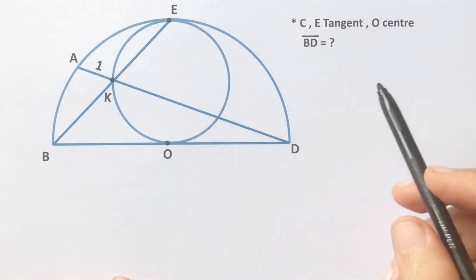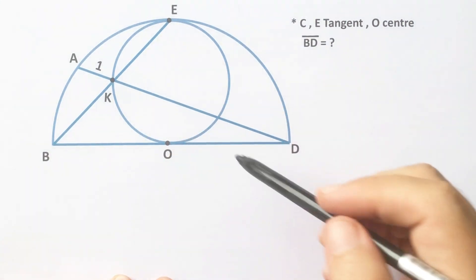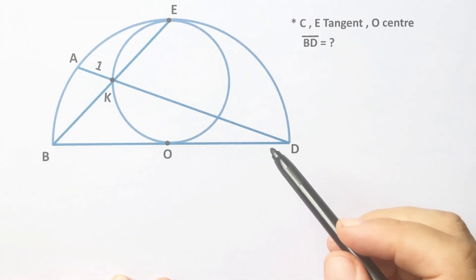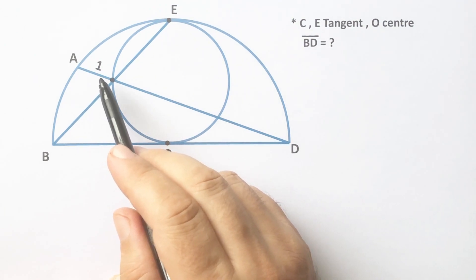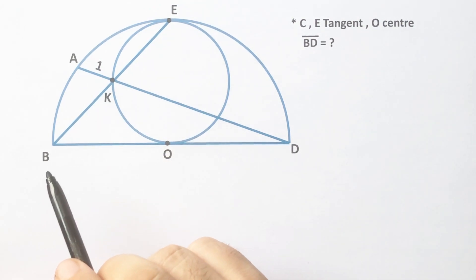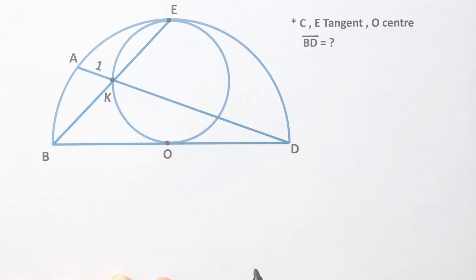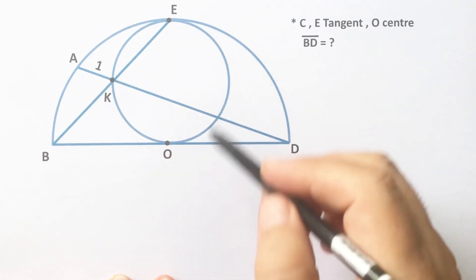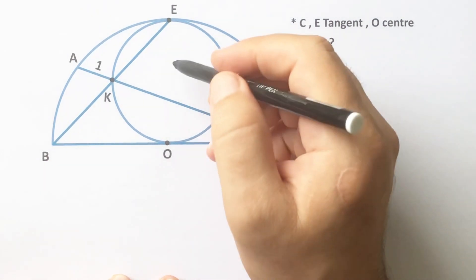In this video, you have one circle and one semicircle. This length is one unit, and the length of BD is x.